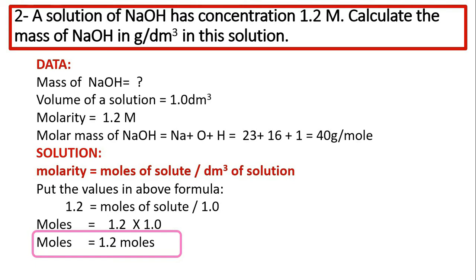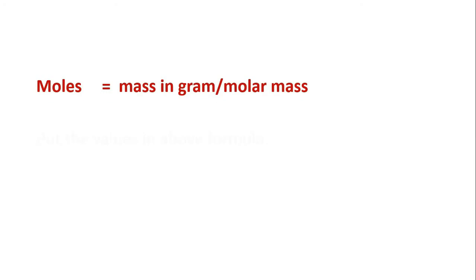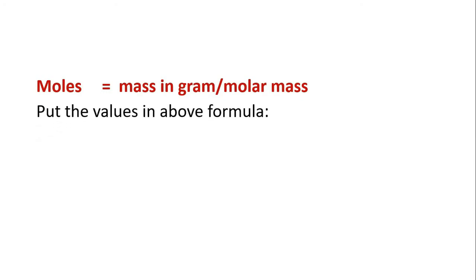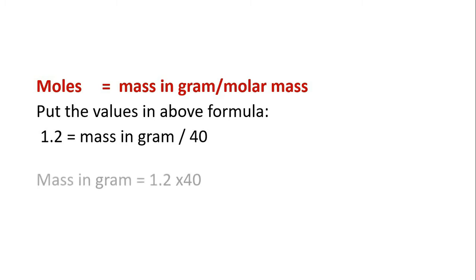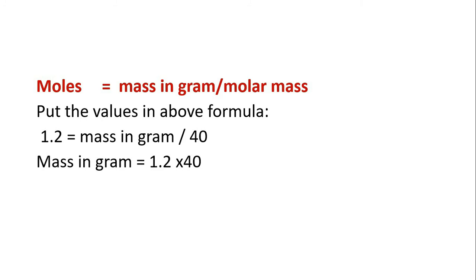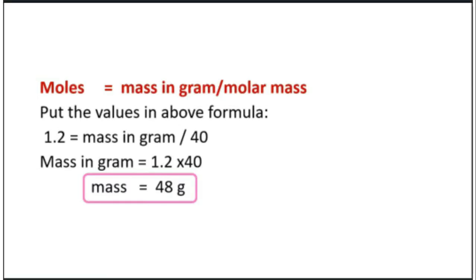But our question is not over — we still have to find the mass. Next step: moles equals mass in gram divided by molar mass. Putting in the values: 1.2 = mass in gram divided by 40. Therefore, mass in gram = 1.2 × 40 = 48 g. That is the mass of NaOH.